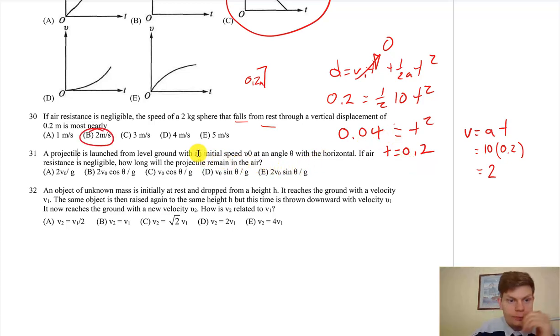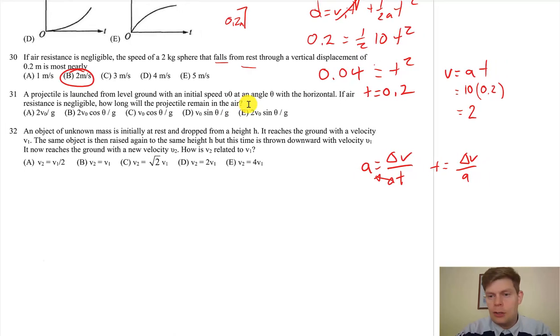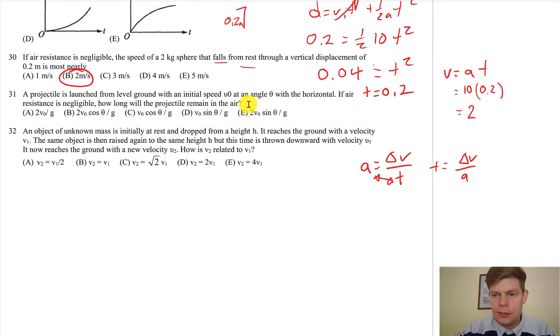Alright, last two questions. Projectile's launched from level ground with initial speed v_0 and angle with the horizontal. Air resistance is negligible. How long will the projectile remain in the air? Basically it's change in velocity over acceleration. You know how like acceleration equals change in velocity over time? We can trade these suckers, moving things diagonally across the equal sign, and we got time equals change in velocity over acceleration.